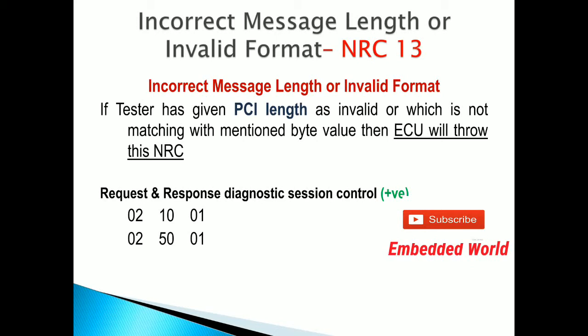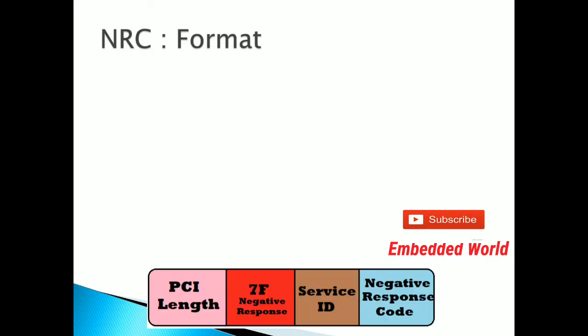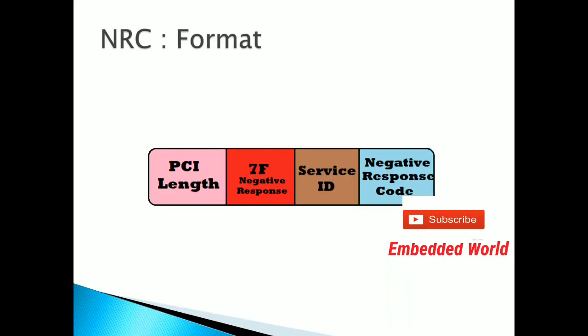Before going to the negative response, you need to know the format of the negative response — in the previous tutorial I got the format wrong, so let's clarify it here. This is the exact format: first, the PCI length; then 7F, which is the negative response identifier; then the service ID of the service you are sending; and finally the NRC — the negative response code. That is the complete structure of the negative response format. Now let's look at negative response code 13.